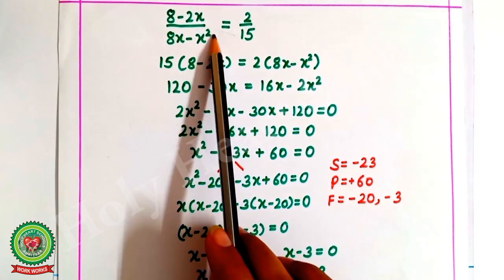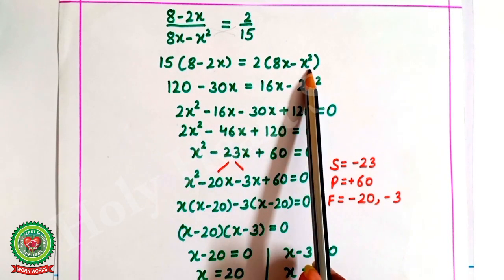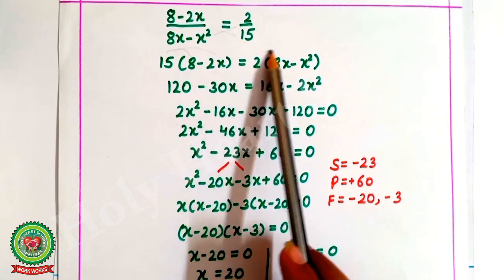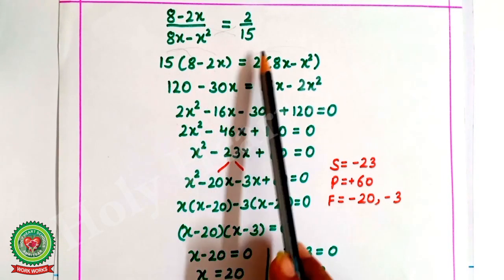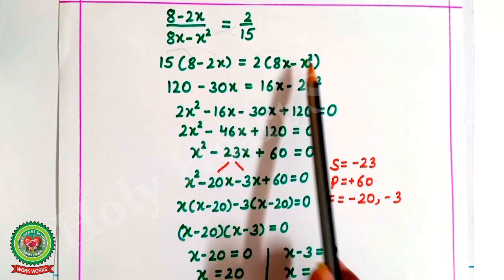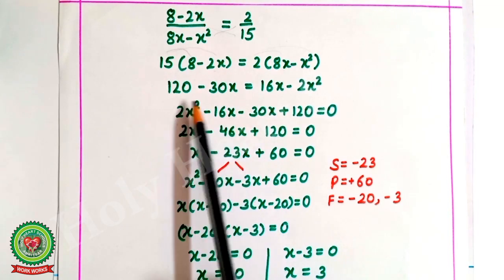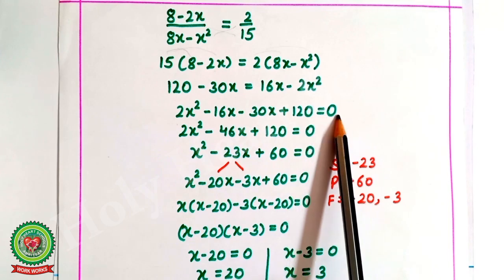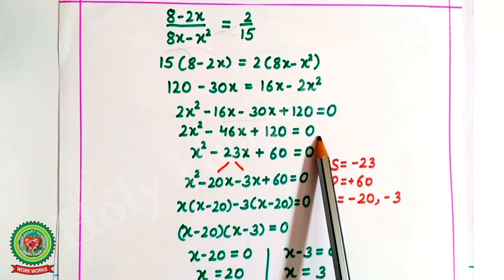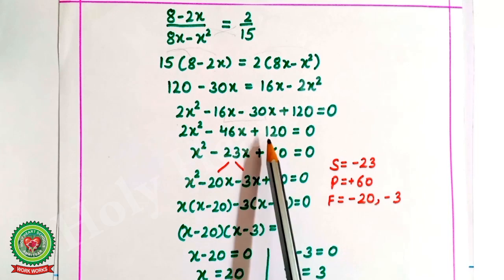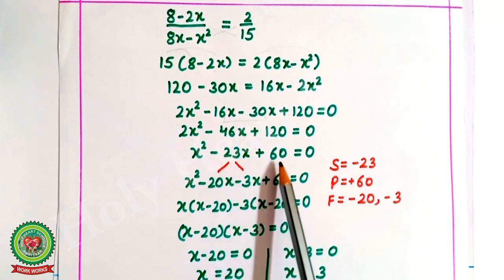Cross-multiplying: 15(8 minus 2x) equals 2(8x minus x squared). Expanding: 120 minus 30x equals 16x minus 2x squared. Collecting like terms: 2x squared minus 46x plus 120 equals 0. Taking 2 as common, the equation becomes x squared minus 23x plus 60 equals 0.